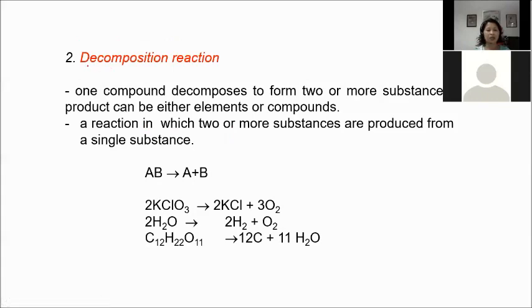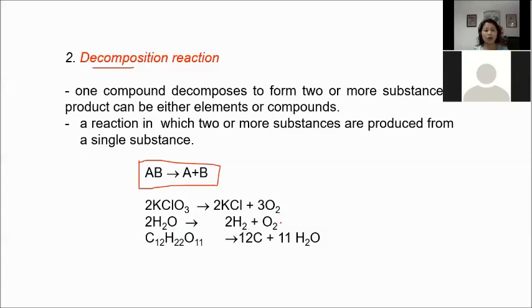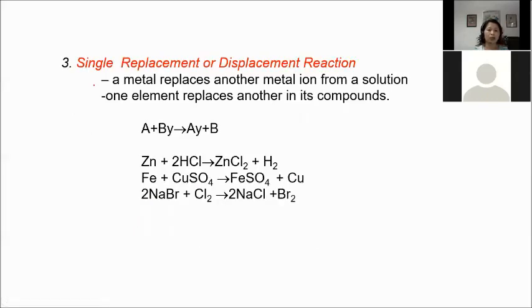The second type is the reverse — decomposition reaction. It is a reaction in which one compound decomposes to form two or more substances. The products can be either elemental or compound. Mathematically: AB → A + B. Examples: KClO₃ (potassium chlorate) → KCl + O₂; water → H₂ + O₂; sugar decomposes to carbon and water. One reactant forms two or more products.